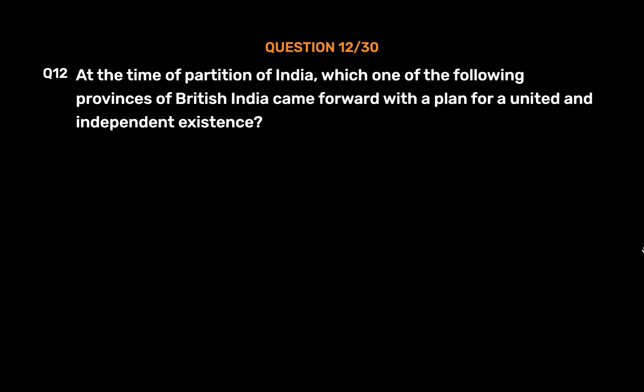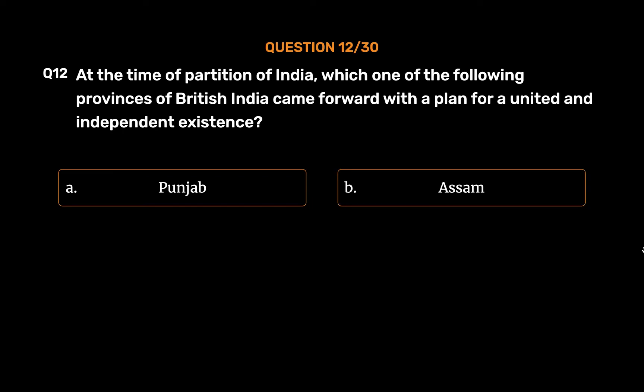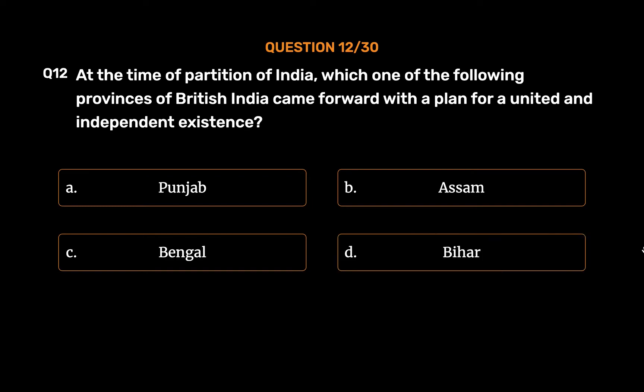Question No. 12. At the time of partition of India, which one of the following provinces of British India came forward with a plan for a united and independent existence? The correct answer is Option A: Punjab.